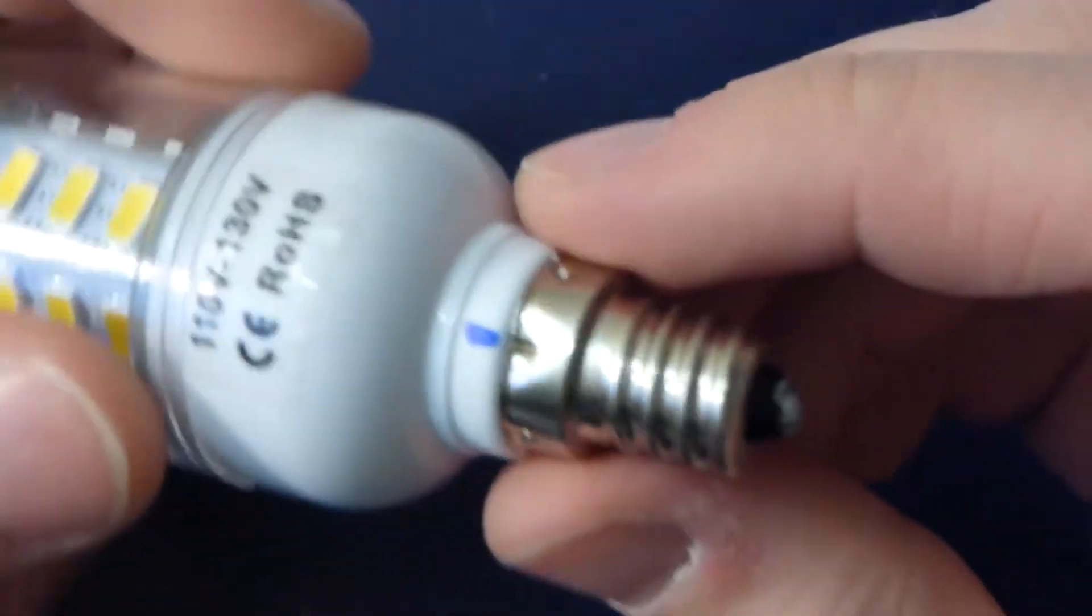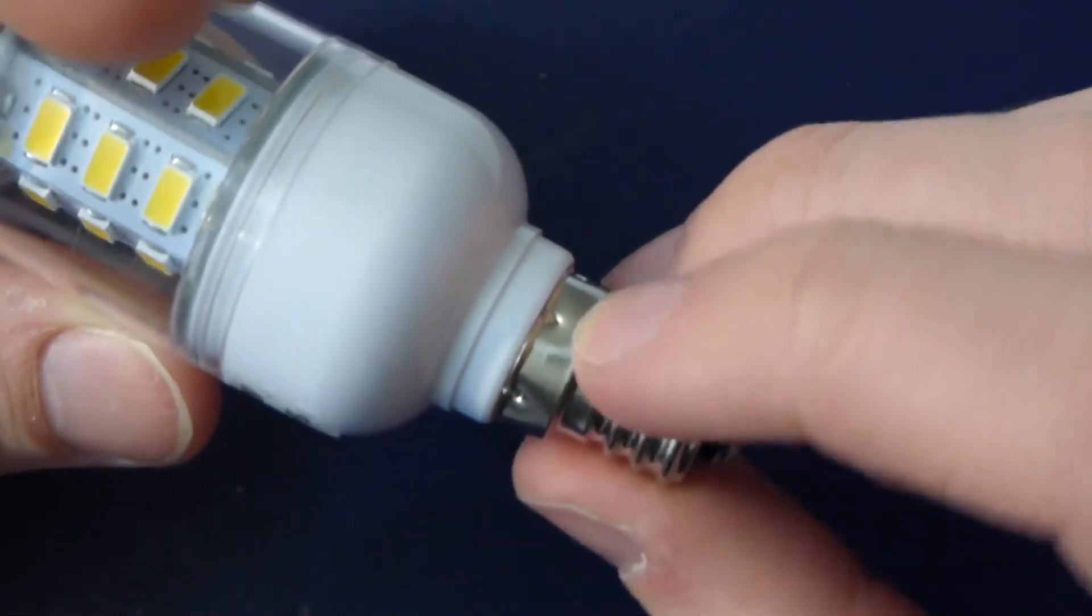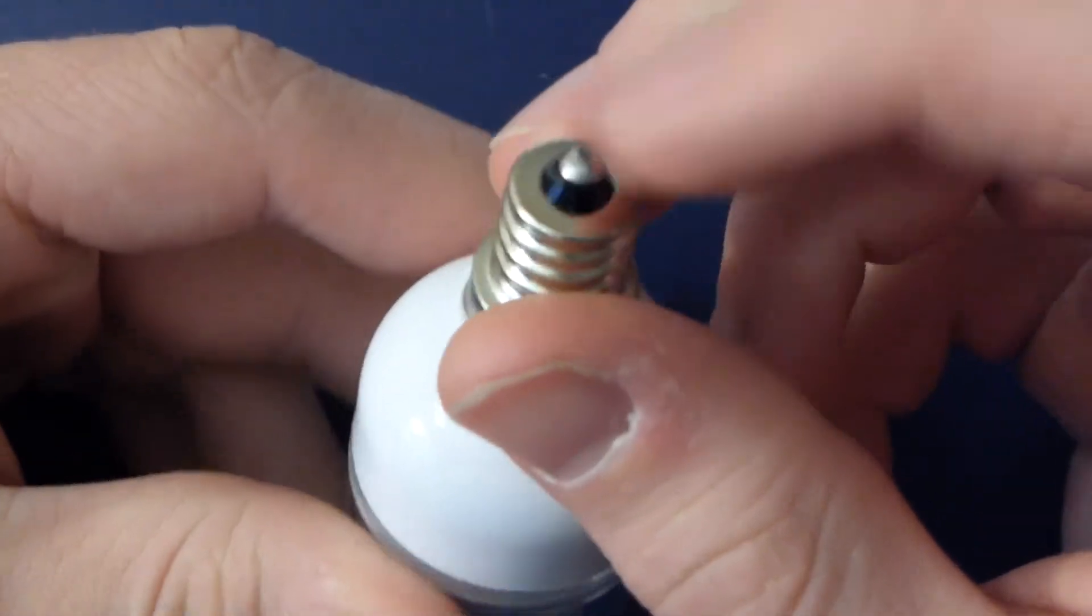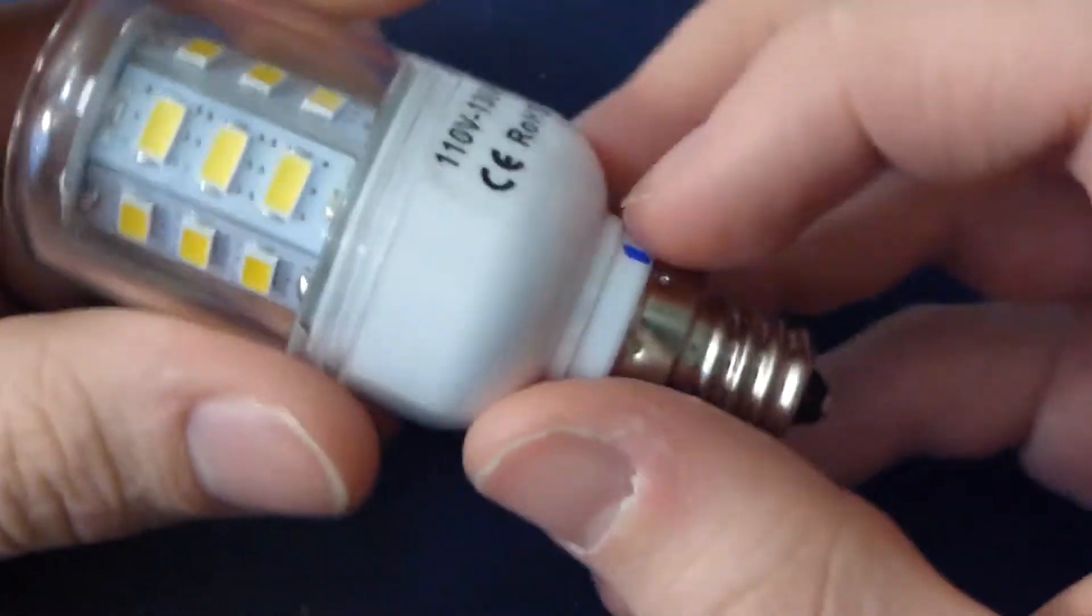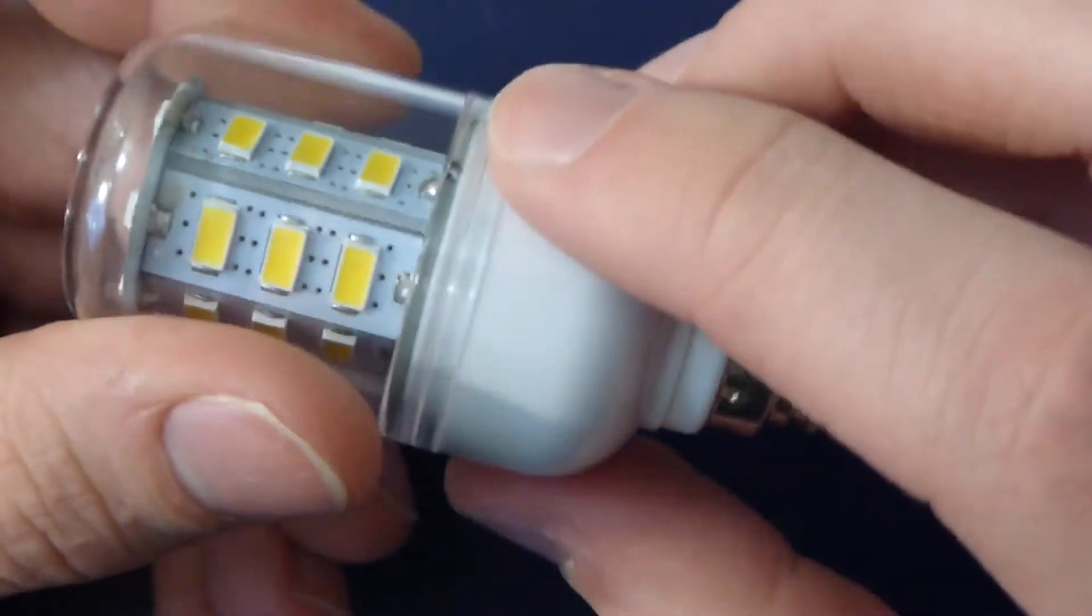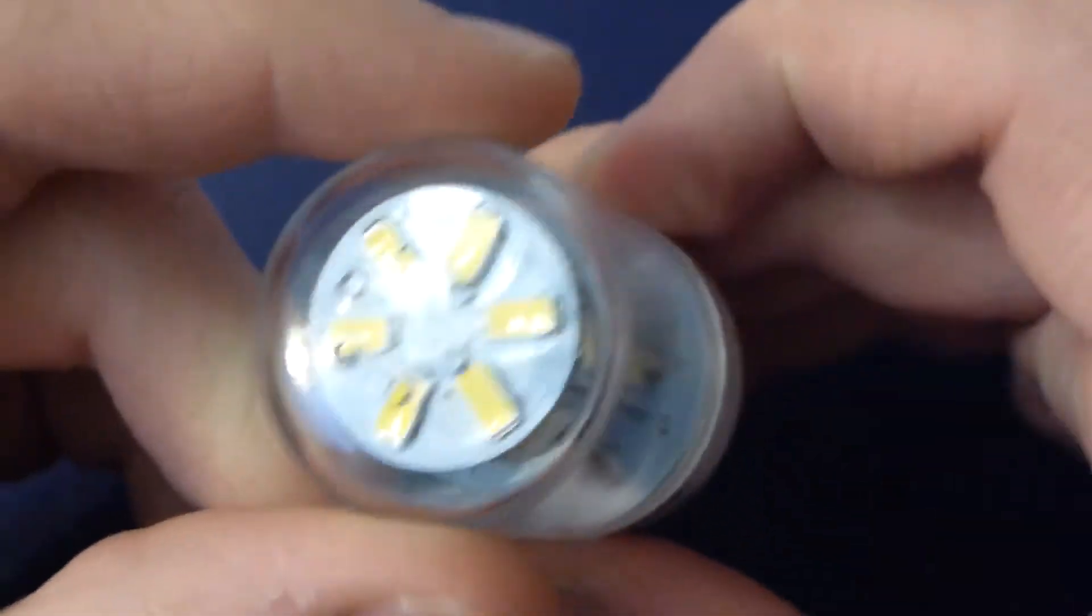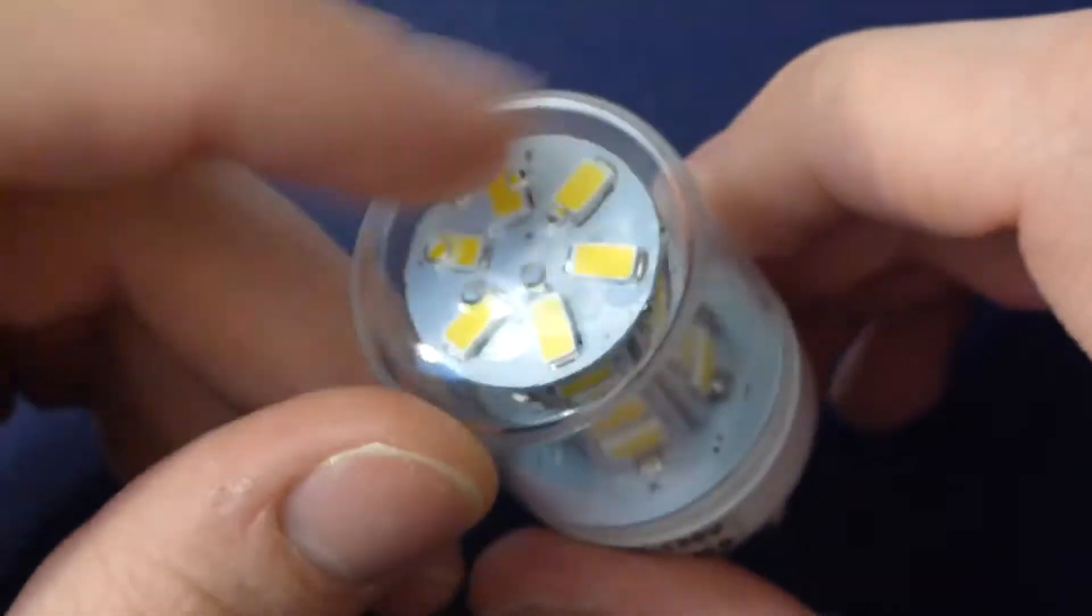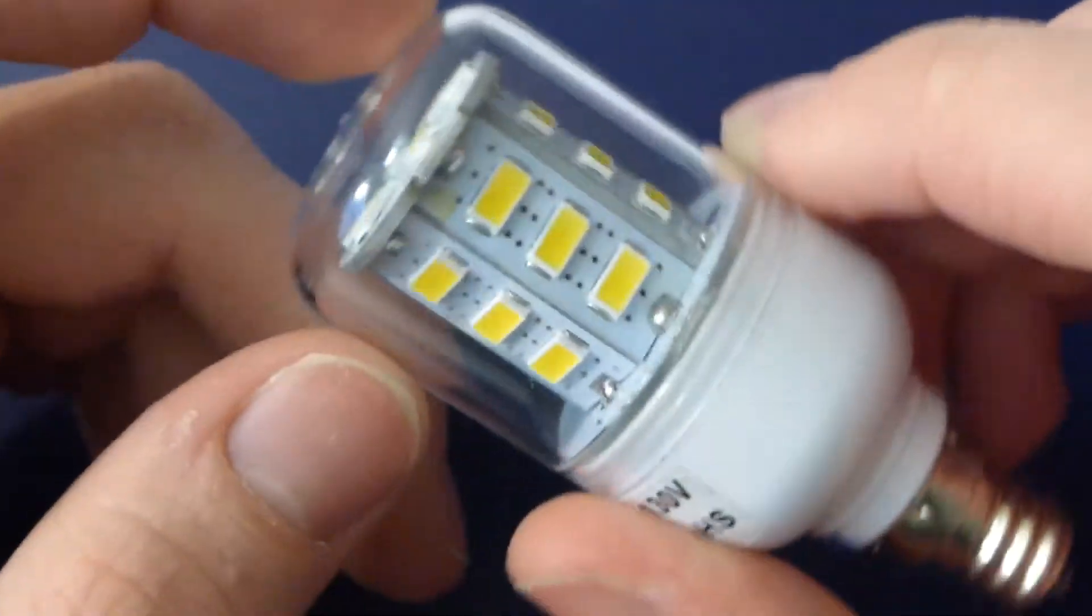They're all just crimped around here, soldered on the bottom. They have this little sticker here. It's all plastic. There's vent holes - five vent holes on the top - obviously for allowing a little bit of convection to happen in here.